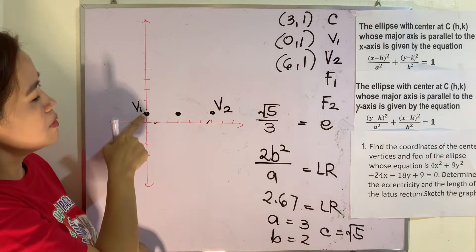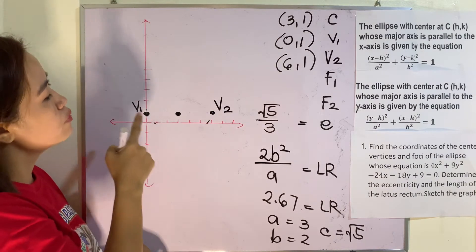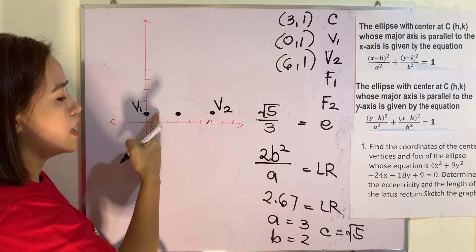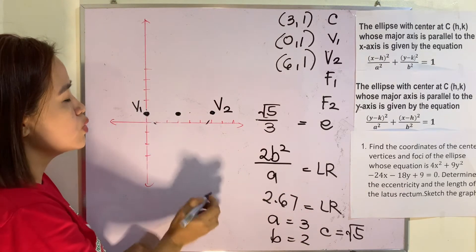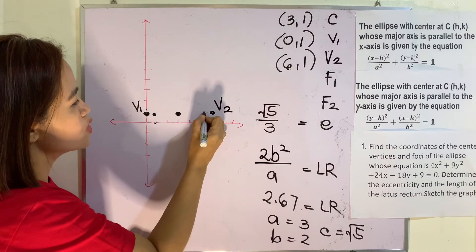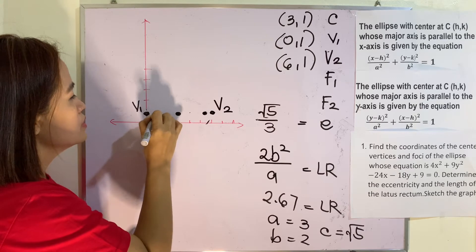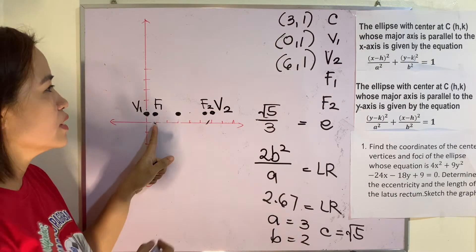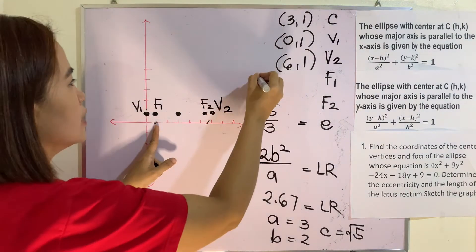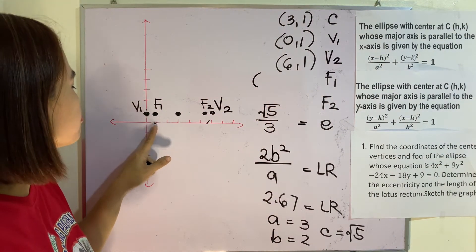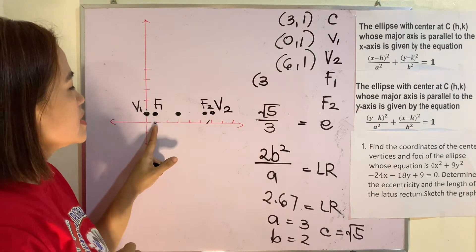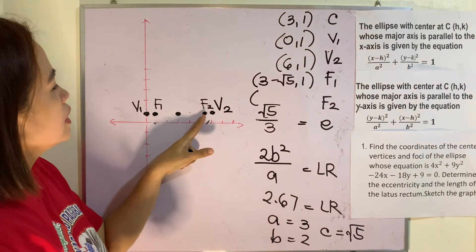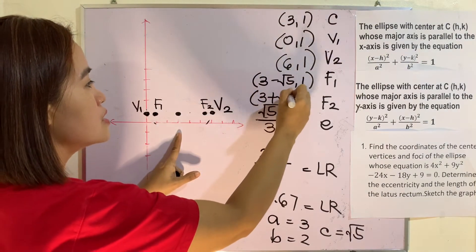What about the focus? The distance from the center to the vertex is a, and the distance from the center to the focus is c, which is approximately 2.23, or the square root of 5. So focus F1 is at (3 minus square root of 5, 1) and focus F2 is at (3 plus square root of 5, 1).